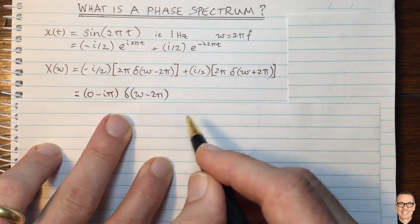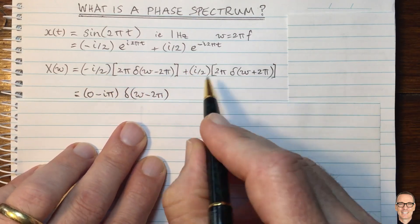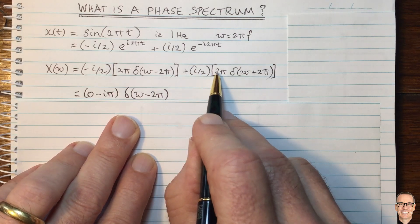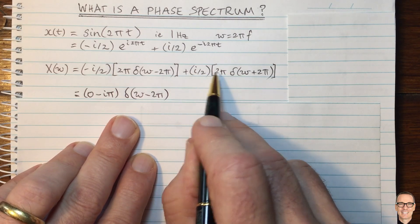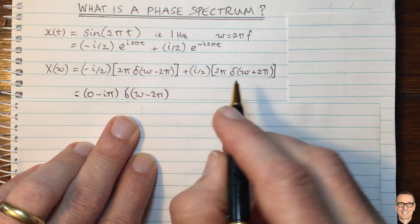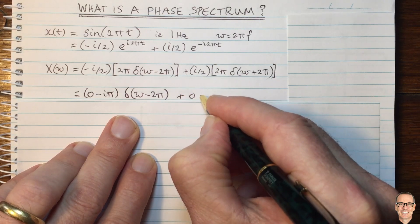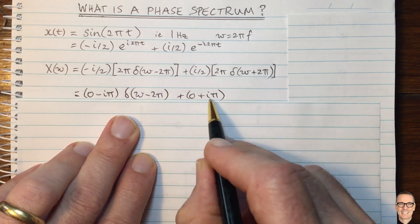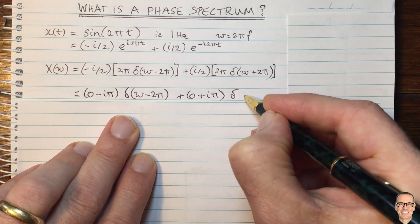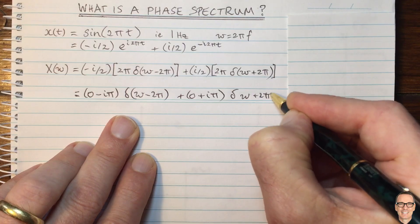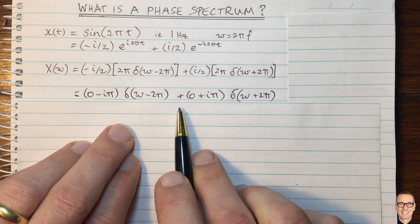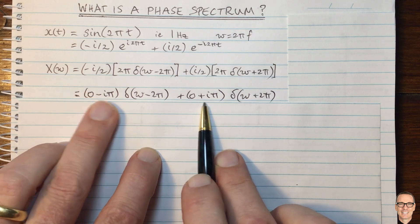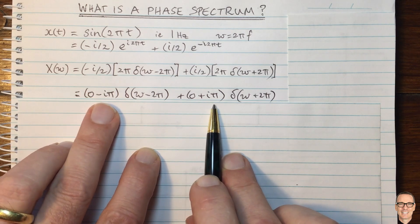This sinusoid equals minus i times a half times this expression. For the second term, the half cancels with the 2 the same way. We have i times pi — positive i in this case — so 0 plus i pi. And that is times delta of omega plus 2 pi. So we've got two delta functions, each multiplied by a complex number constant.